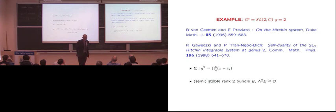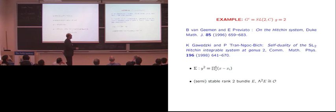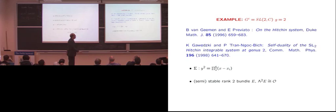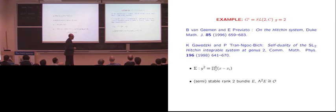Because we're talking so much about this fibration, I thought it would be useful to actually write down an example — as far as I know, the only example that one can really write down. We're on a curve of genus two, a hyperelliptic curve — a branched double cover of the projective line branched over six points. I'm going to look at the integrable system as defined on the cotangent bundle of the moduli space of stable bundles.